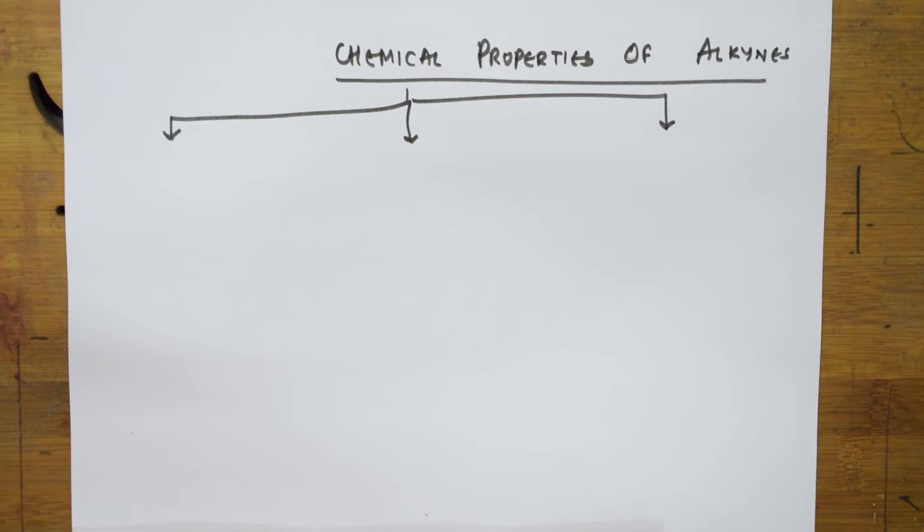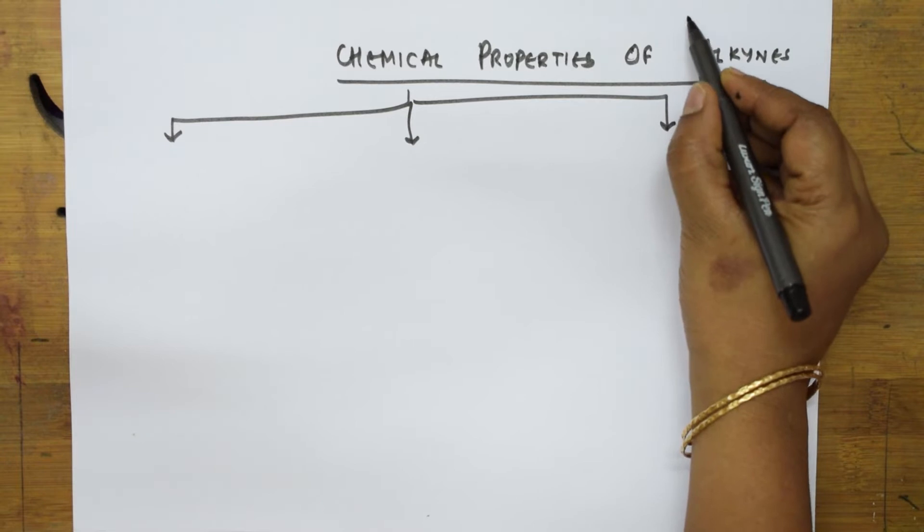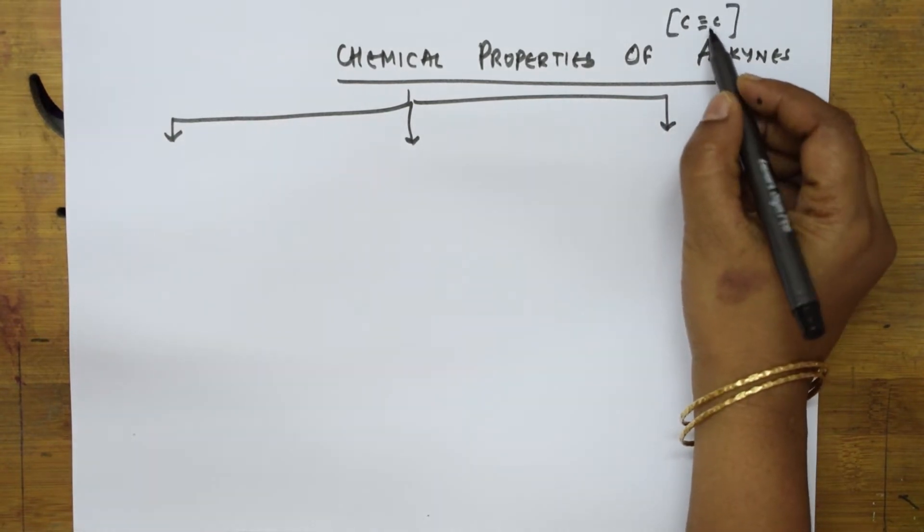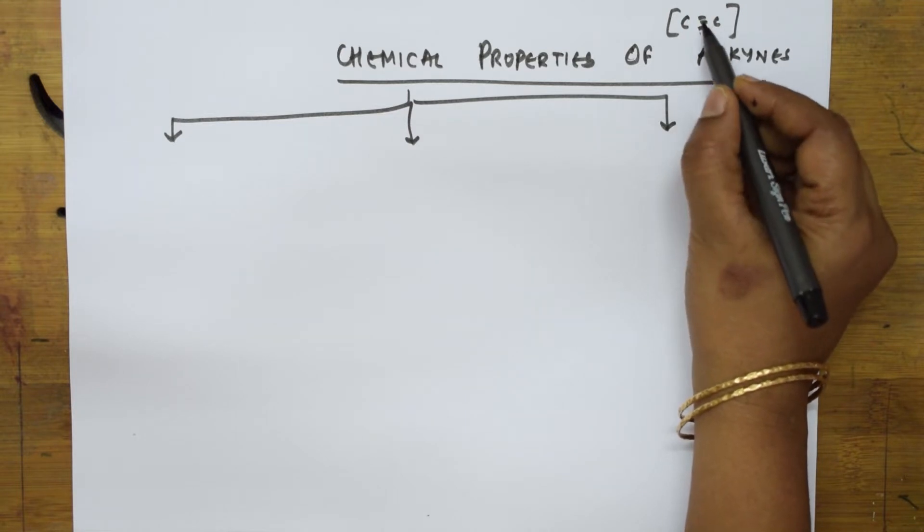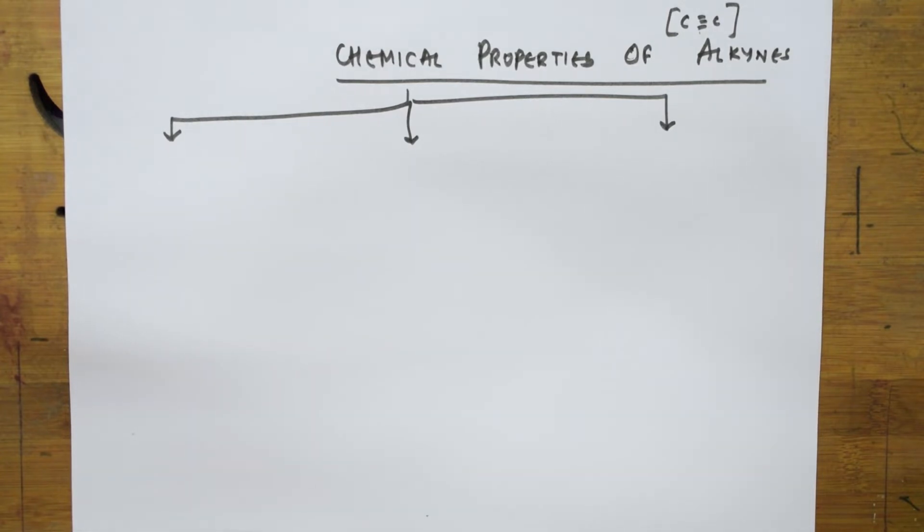When I have to come back to alkyne's chemical properties, what should I remember first? Basically alkyne is a triple bonded compound. Alkynes are denoted by triple bonded C≡C. Why did I write this? Because of the presence of triple bond, that is, it has one sigma and two pi bonds. This is going to show a wide range of chemical properties.